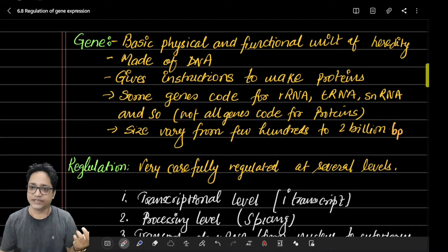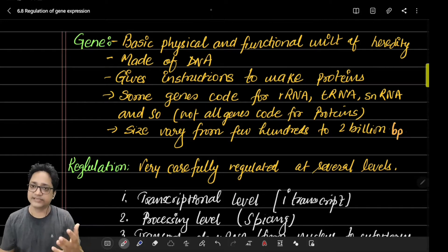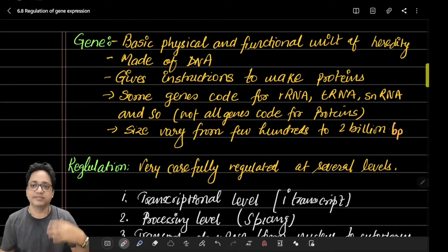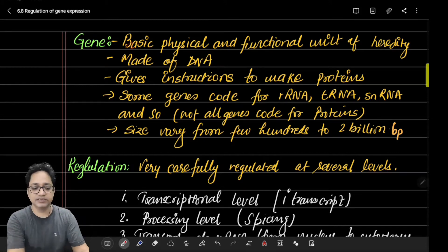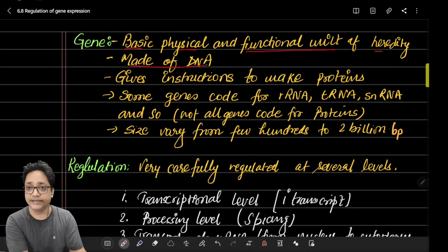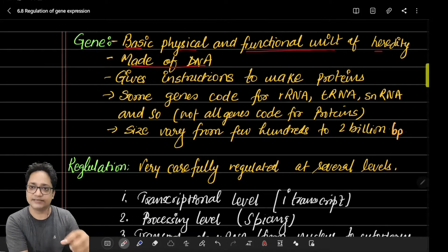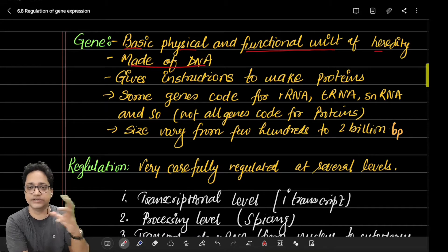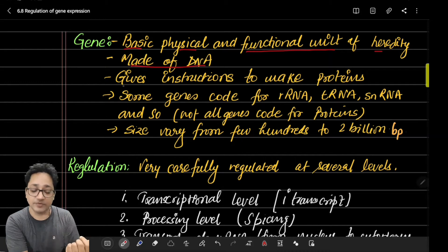To start with, regulation of gene expression has been taken from Chapter 6, Topic 8. Before I start the regulation part, let me discuss what a gene is. A gene is the basic and functional unit of heredity and it is made up of DNA. The gene has the capability to carry information from one generation to another.